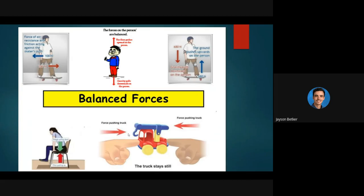Now let's take a look at some examples of balanced forces. So let's take a look at the top left, you've got that skateboarder, can you see my mouse, you've got that skateboarder which has a hundred newtons of force acting forwards maybe from you know his or her leg pushing them forward. But then you'll have the force of air resistance and friction acting against the skater's push, a hundred newtons in the opposite direction.